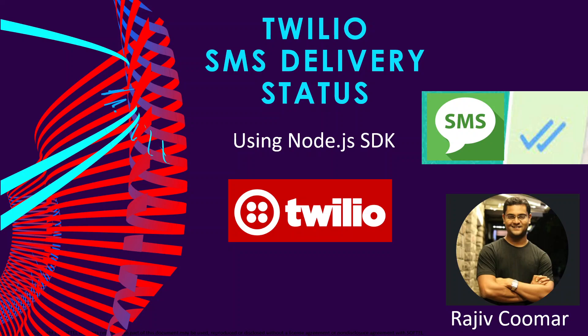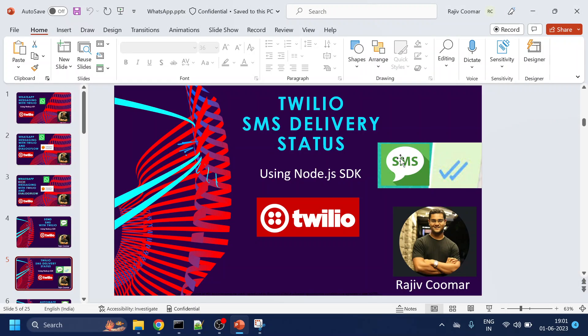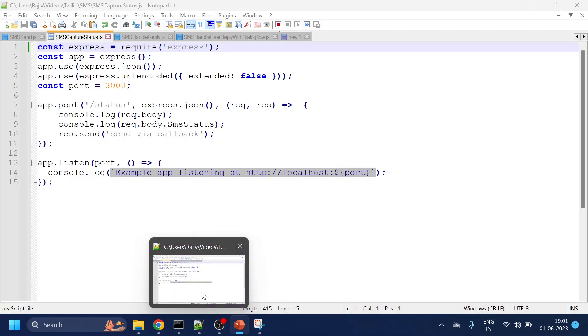So if you take the example of WhatsApp, in WhatsApp you see something like a double tick, single tick, gray tick, blue tick, right? Those ticks give information like whether the message is delivered or read. What Delio supports from the SMS side is two things: one is sent, and one is delivered.